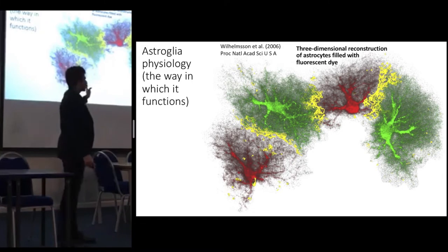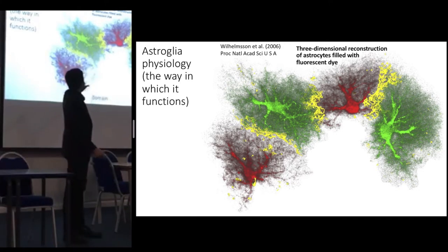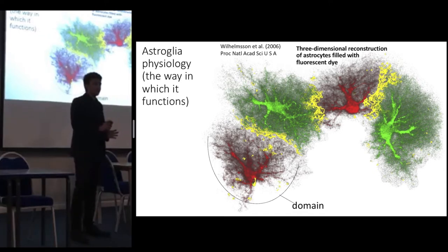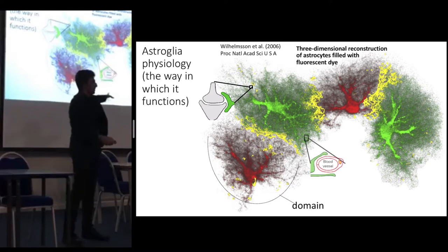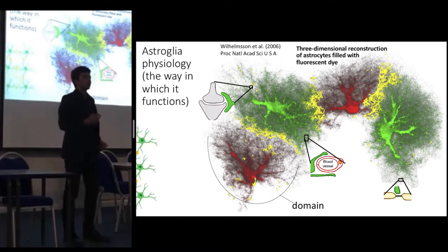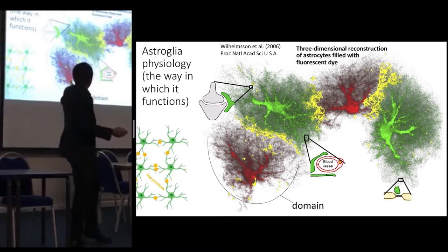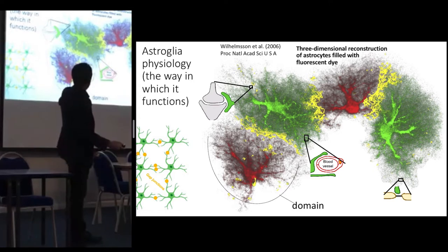Astroglia exist in separate domains — they don't need to overlap. Once in their domains, they extend their branches and can contact several things: synapses, which they wrap around; blood vessels; nodes of Ranvier; and other astrocytes. When they contact other astrocytes, they form gap junctions, and when those gap junctions form, their cytoplasms fuse to form a syncytium — so all are interconnected, unlike neurons.